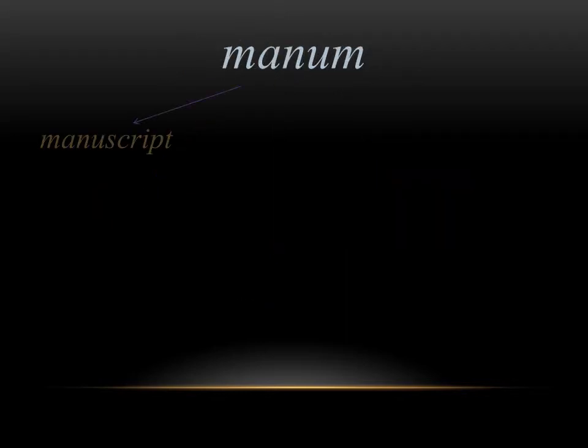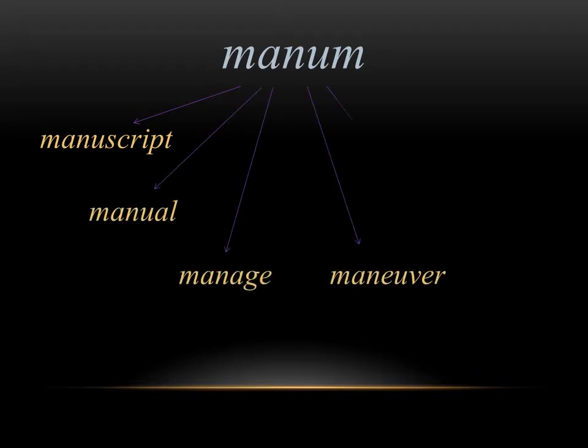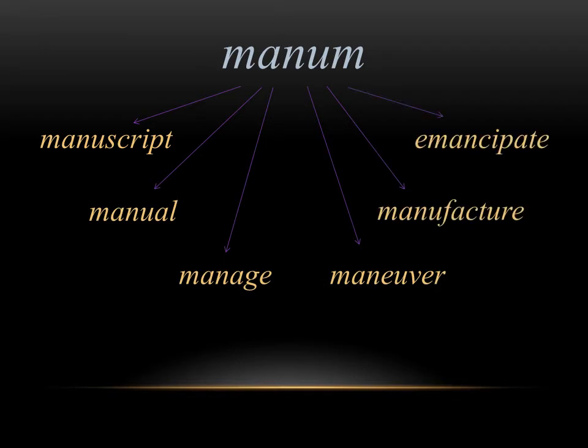Manus means hand in Latin, and in English we get a lot of derivatives. These include manuscript, manual, manage, maneuver, manufacture, and emancipate. If you think of the meaning of all six of these words, you can see that in English they're holding on to that root of a hand. A manuscript has the roots for hand and to write — it's something written by hand. Manual labor is something you're doing with your hands, and manufacture is making something with your hands. All six of these words are holding on to that Latin root.